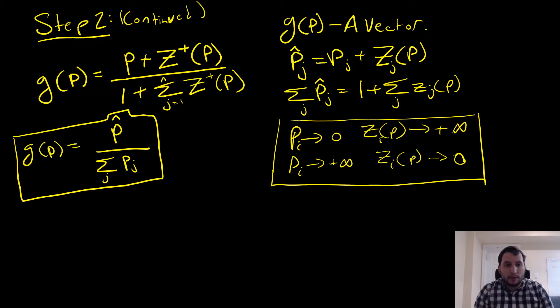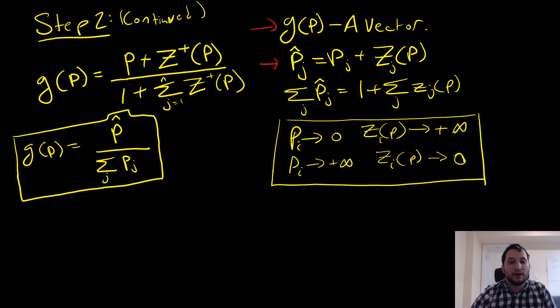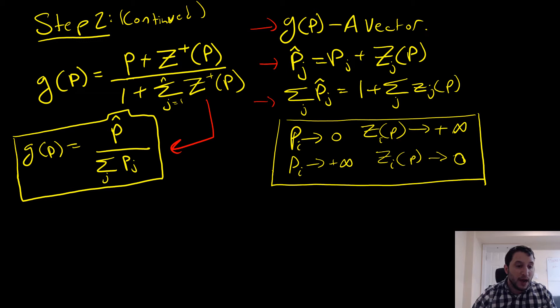Continuing step two, we're talking about the world of vectors, and we want to understand why this is our appropriate mapping. We're going to define p̂_j as equal to p_j, and likewise if we put a summation sign in front of it we get the following. This corresponds to our numerator and denominator in our mapping, which brings us down to this here — and this is a natural way to normalize our prices.